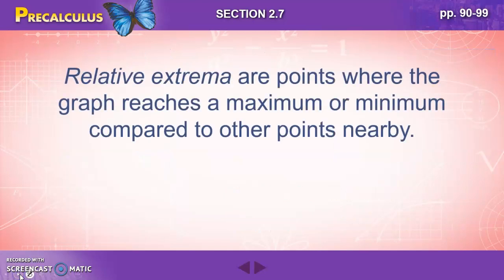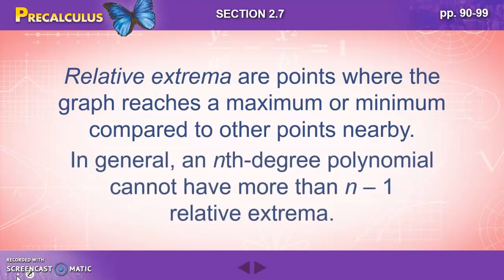Relative extrema are points where the graph reaches a maximum or a minimum compared to other points nearby. In general, an nth degree polynomial cannot have more than n minus one relative extrema. So a fourth degree polynomial can't have more than three relative extrema. A third degree polynomial can't have any more than two relative extrema.